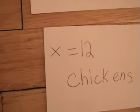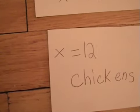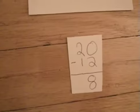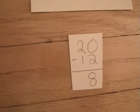Now we must subtract 12 from 20 to get the number of rabbits, just like here in the beginning. So, 20 minus 12 equals 8.